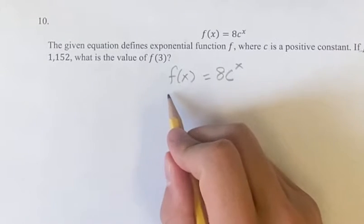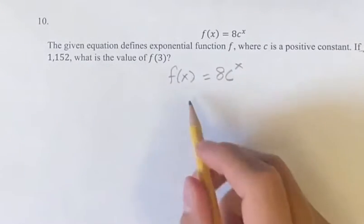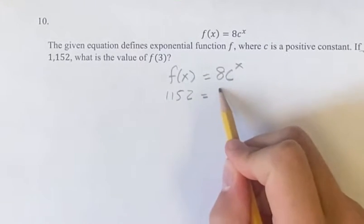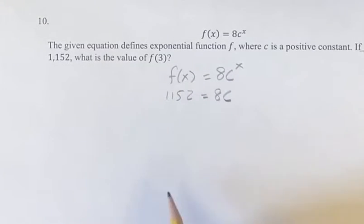So what would that look like? Well, f(2), 1152, in for f(x), is equal to 8c to the x, and here x is equal to 2. So 1152 is equal to 8c squared.